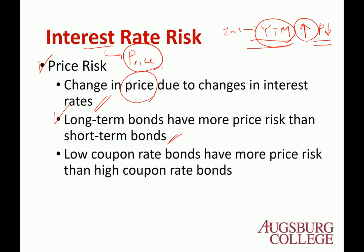If you don't have any coupon, a zero coupon bond is a deep discount bond. The price range is a lot larger than a coupon bond.